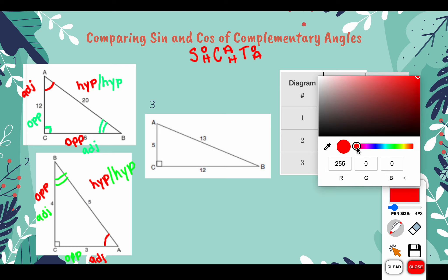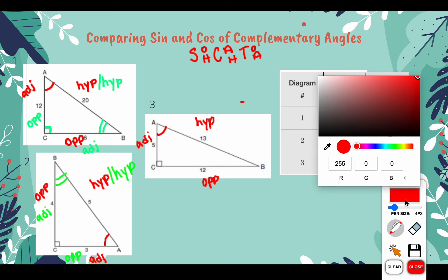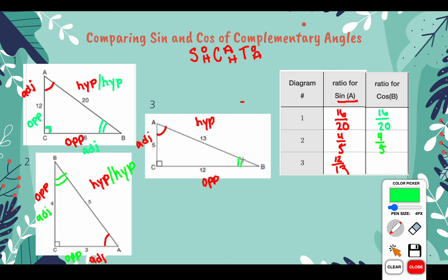Now let's do this last one. We are doing sine of A, so we label our reference angle. Here we would have opposite, hypotenuse, and adjacent. So sine of A would be 12 over 13. And then for B, our reference angle is here. We would then have our opposite, adjacent, and hypotenuse sides. So cosine being adjacent over hypotenuse would again be 12 over 13.